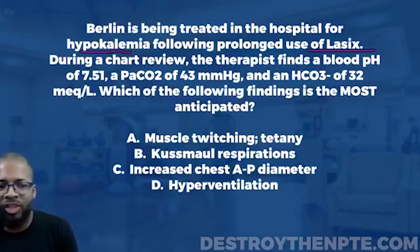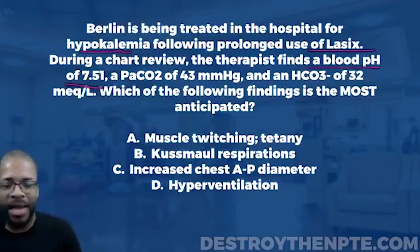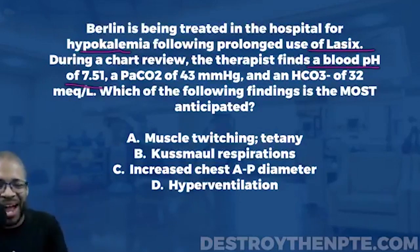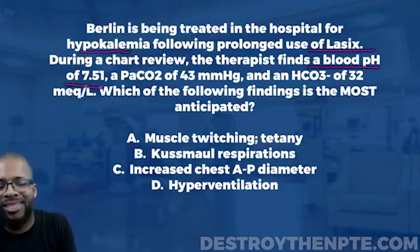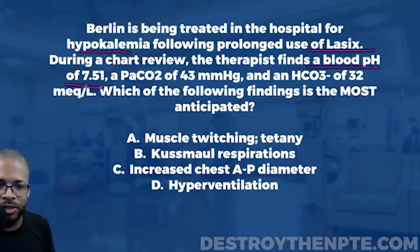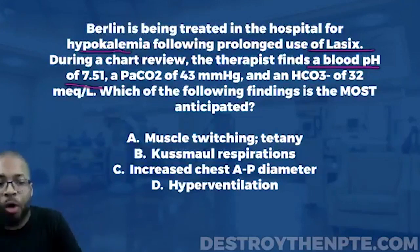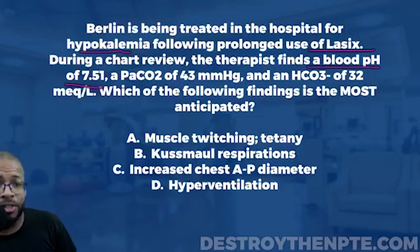The chart shows a blood pH of 7.51. For the NPTE, you have to know normal ranges for pH. Normal arterial blood pH is 7.35 to 7.45. This patient has a 7.51, so that is alkalosis. I now know the patient has hypokalemia and is in a state of alkalosis. I don't know yet if it's respiratory or metabolic, but they are definitely in alkalosis.